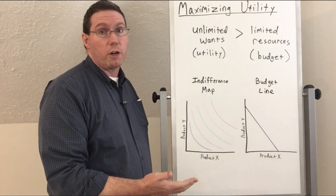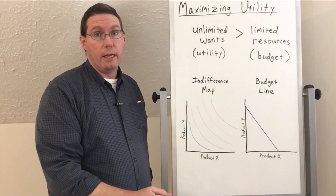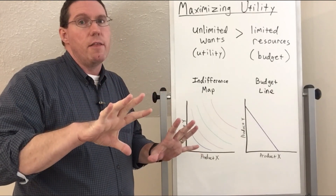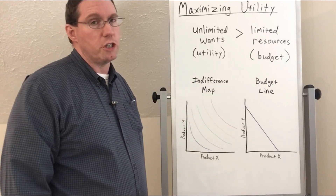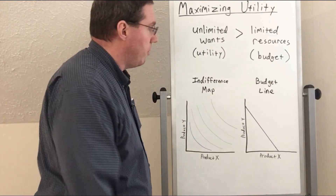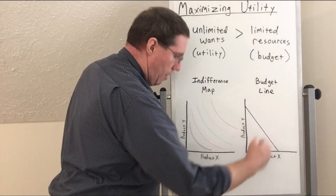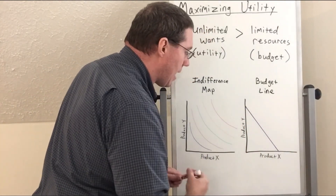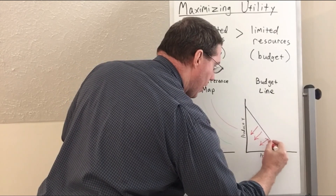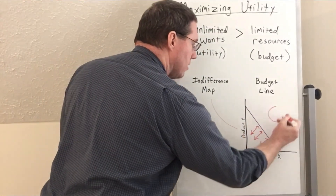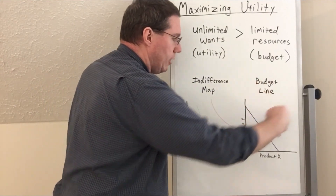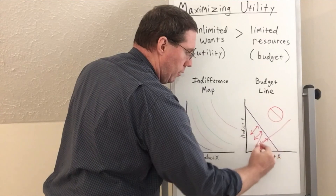Mostly in this class we're going to talk about money as something we're budgeting. But it's important to understand that all of these concepts extend to much more than just money — there's land, labor, and capital. The deal with the budget line — our limited resources — is that we have to remain inside of the budget line. We are constrained to inside the budget line; we cannot go outside of it.